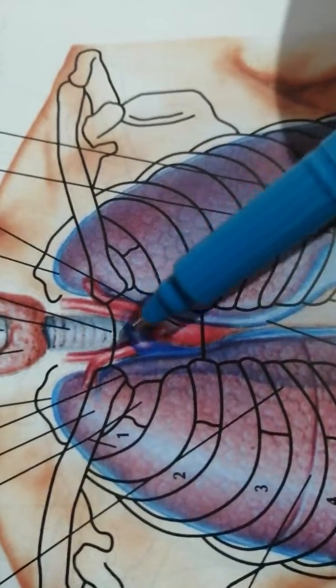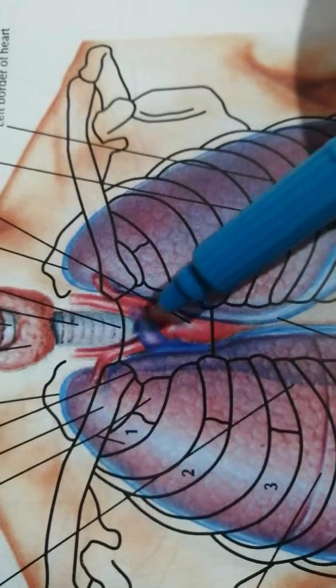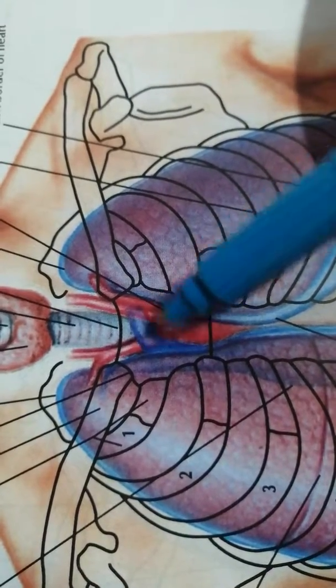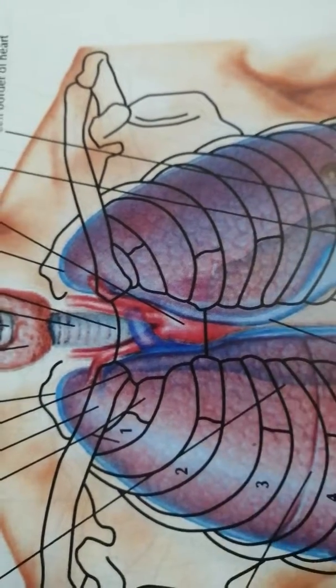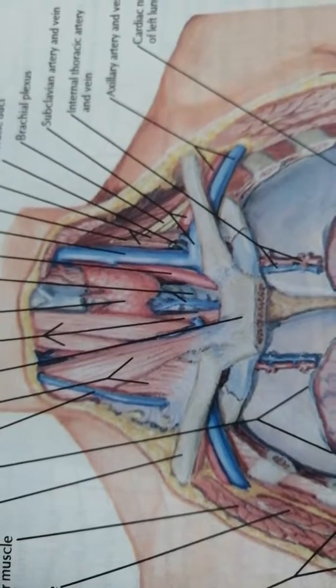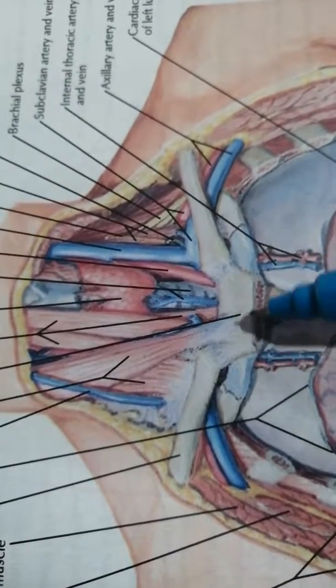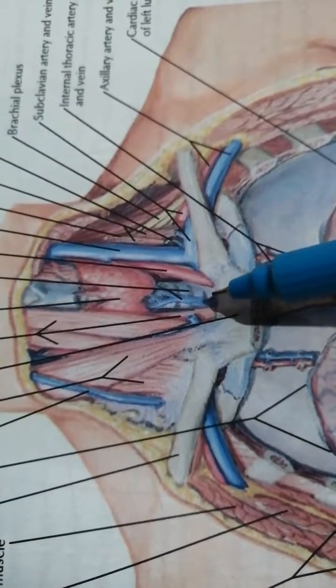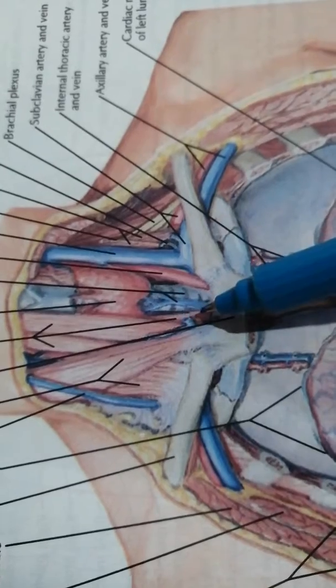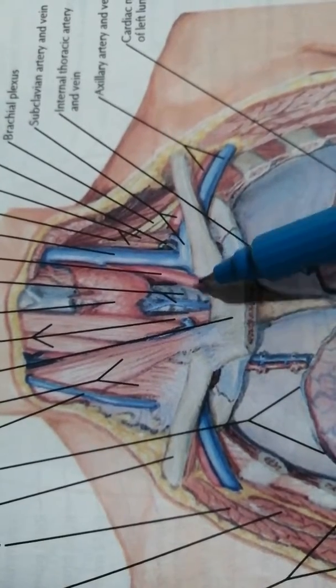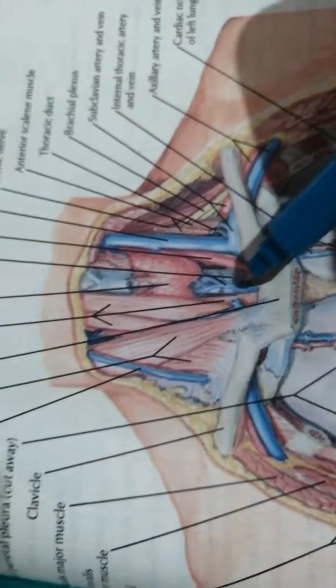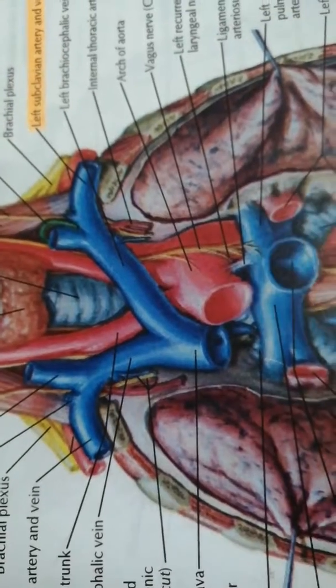In this diagram the left brachiocephalic vein has not been cut, so it can be clearly seen that it is an anterior relation of the trachea. Again, over here you can appreciate that the manubrium sterni is an anterior relation. The sternothyroid muscles are again easily visible. The inferior thyroid veins are also anterior relations — this one is the inferior thyroid vein over here.